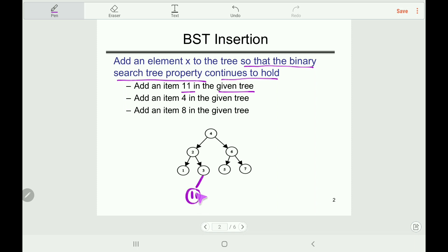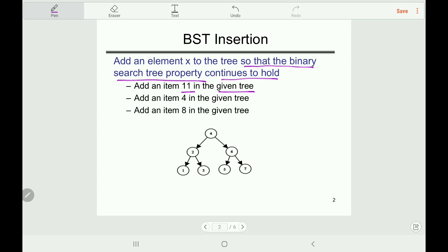Suppose we add item 11 here — does it maintain the BST property? No, because in a binary search tree every node has a lesser value in its left subtree and a larger value in its right subtree. For node 3, item 11 is larger but placed in its left subtree, so this is not the correct insertion.